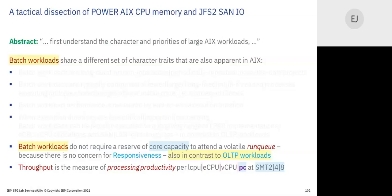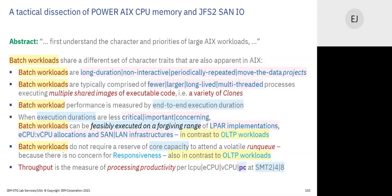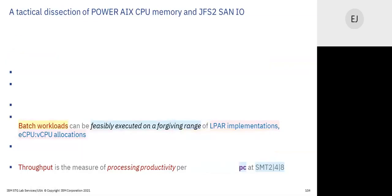Throughput is a measure of processing productivity — per logical print time for virtual — and at IBM we are founded on processing productivity per processor consumed at your choice of SMT. Batch workloads you can run over entitlement; they will run, they just take longer. Batch workloads: easy to tune.